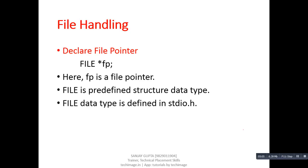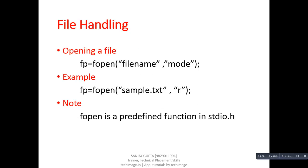FILE is already defined in stdio.h, and because it is predefined we have to write it in capital letters. Next, we have to open a file. For this purpose we use a predefined function called fopen, which contains two arguments: first is the name of the file, and second is the mode. In the example below, fopen contains a file named sample.txt and mode is 'r', which stands for read. So fopen opens sample.txt in read mode and returns a pointer which is stored inside fp. fopen is defined in stdio.h.